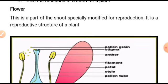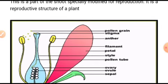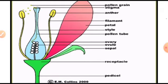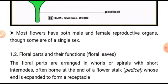Now let us see the flower. The flower is a part of the shoot, specially modified for reproduction — it is the reproductive structure of plants. Pollen grains are transferred from the anthers to the stigma in the process called pollination. The flower has anthers, filaments, petals, style, pollen tube, ovary, ovules, receptacle, and pedicel.